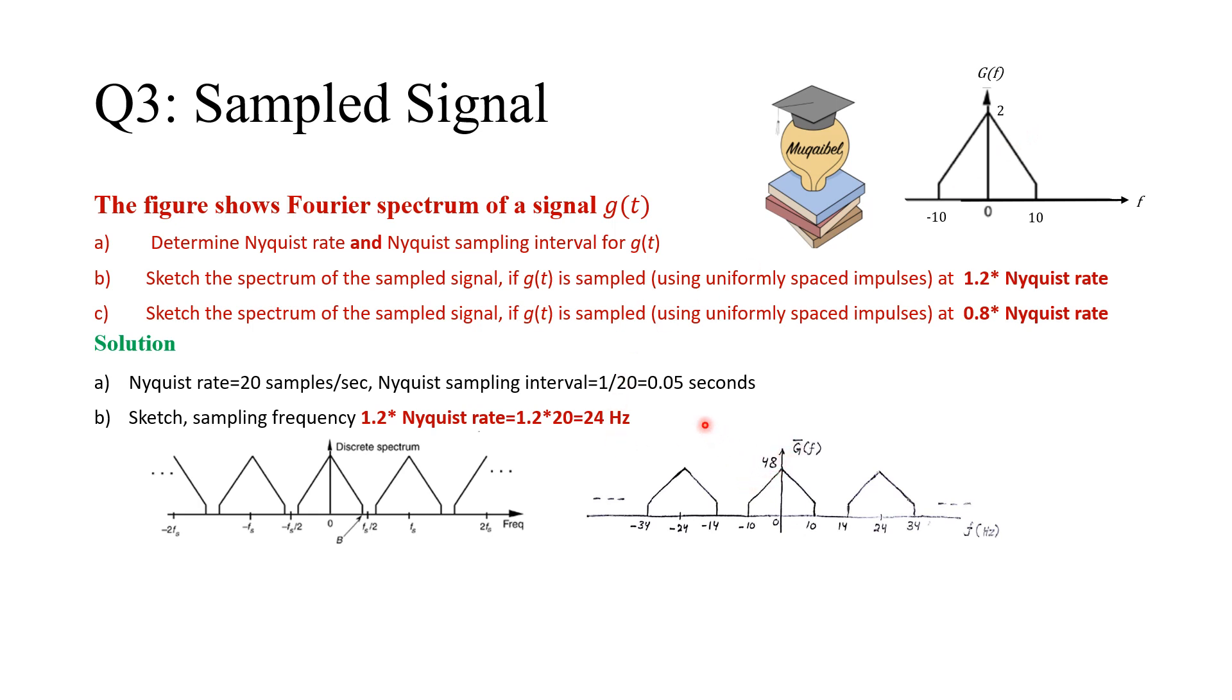Now, to the more difficult part, to the challenging part, part C. Sketch the spectrum of the sampled signal if we sample at 0.8 times Nyquist rate. Now, you can pause the video. Take five minutes to finish this. And let's get back when you are ready.